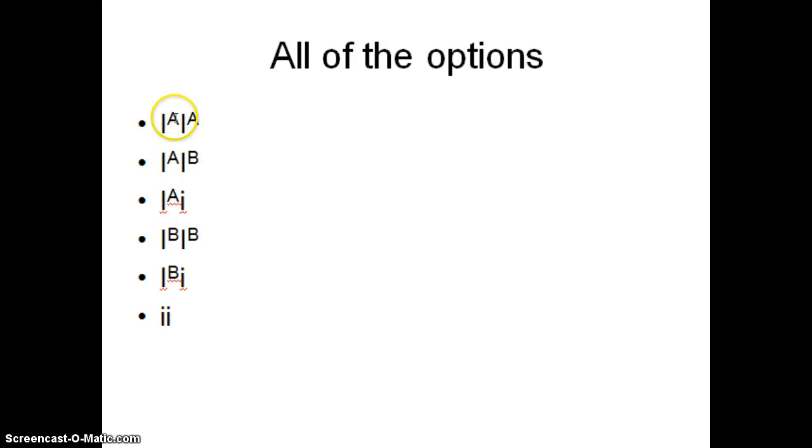So here are the options. Here's the first one that I gave you. Capital I superscript A, capital I superscript B. Capital I, A, capital I, B. Capital I superscript A, little i. Capital I superscript B, capital I superscript B, capital I superscript B, little i. And two little i's.